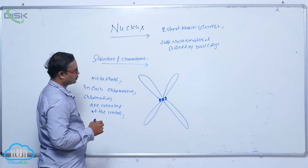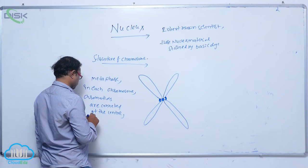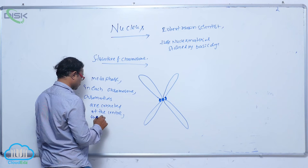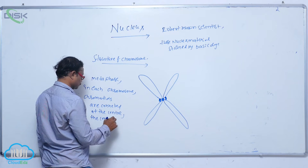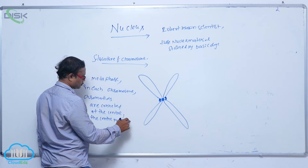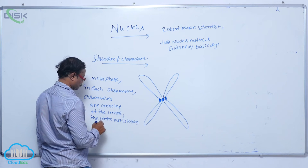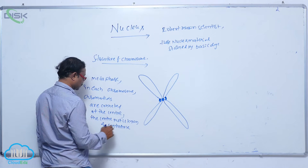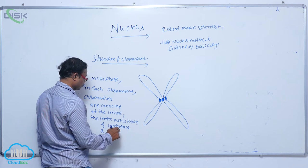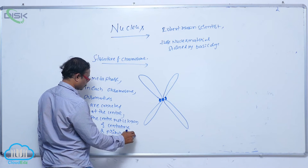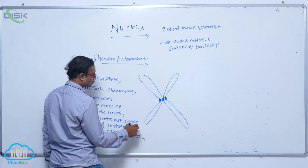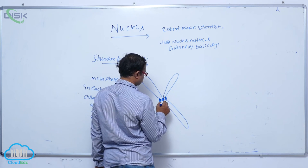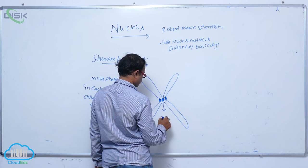The center part where the chromatids are connected is known as the centromere. The chromatids are held together at this primary constriction, which is known as the centromere.